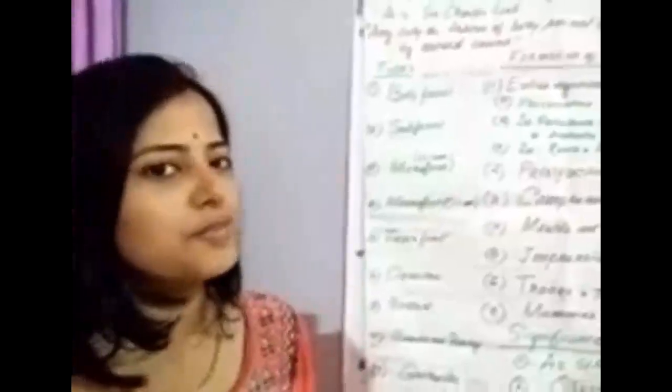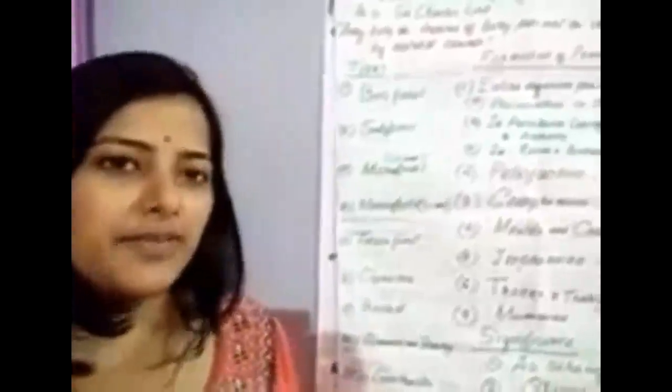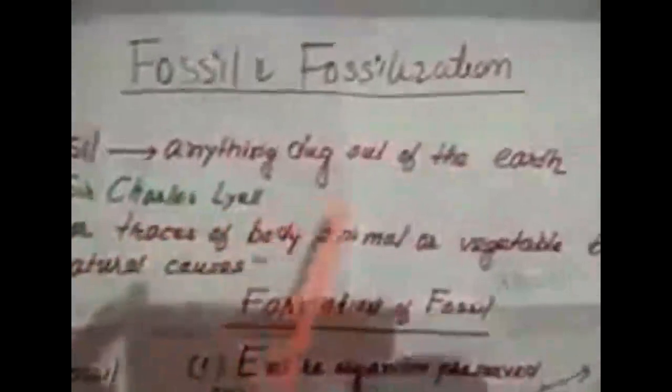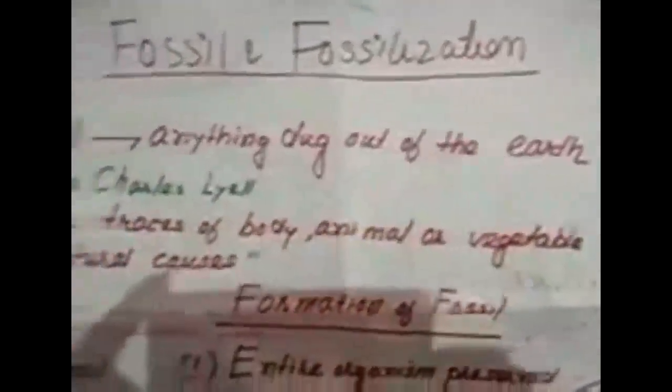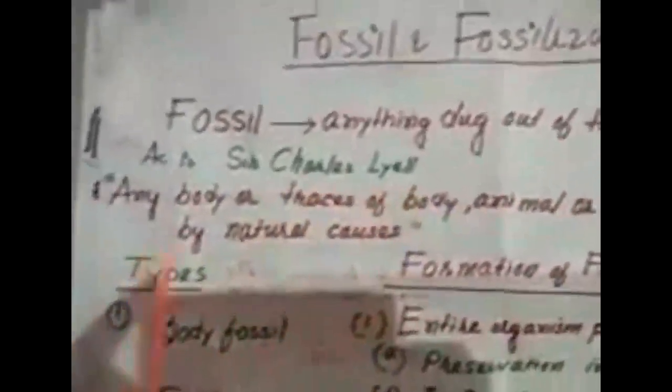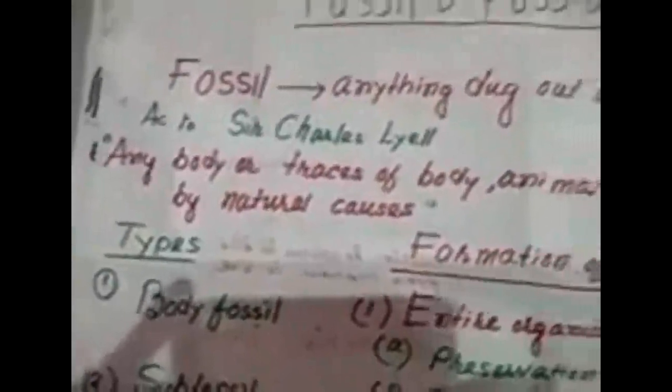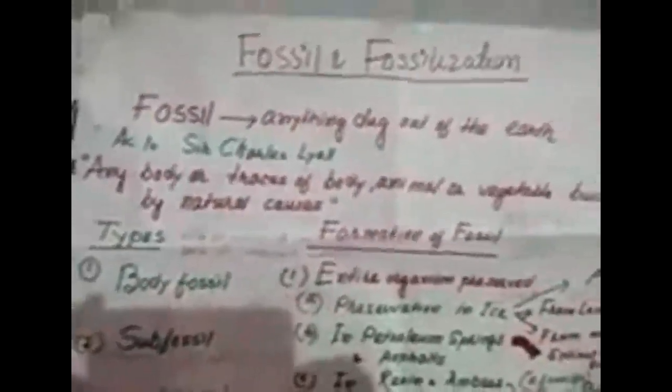Hello students, welcome to PDU in Swen. Today we will discuss fossil and fossilization. First of all, what is a fossil? A fossil is anything that is dug out of the earth. According to the definition, any body or traces of the body, animal or vegetable, that is buried and preserved by natural causes, or other organisms that can be preserved — these are fossils.